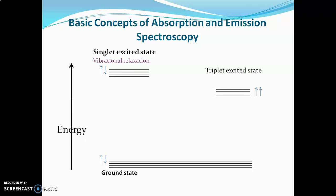Triplet excited states are always lower in energy than the singlet excited state, so triplet excited states are more stable. Normally when UV-visible light is absorbed by a molecule, its electron will jump from the ground state to the singlet excited state. This is the basis of ultraviolet and visible absorption spectroscopy — the electron absorbs UV-visible light and transitions from the ground state to the singlet excited state.